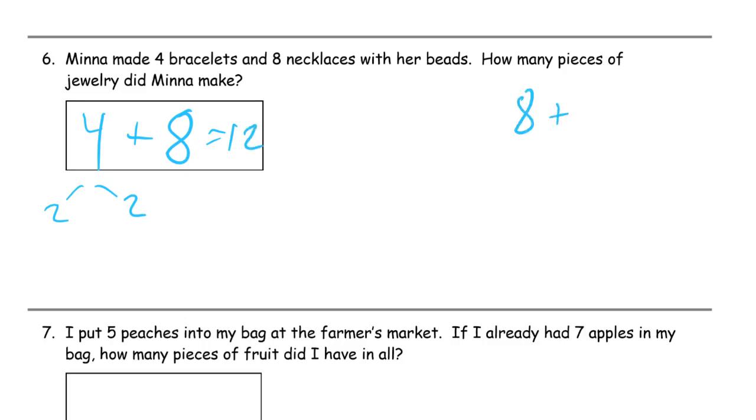So write that out. 8 plus 2 is 10. And 10 plus 2 is how we got the 12. Minna made 12 pieces of jewelry.